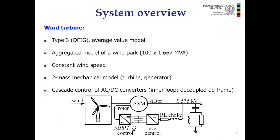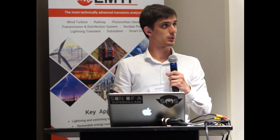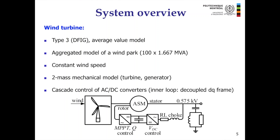Taking a closer look at the system, starting with the wind farm: it's a DFIG induction generator. In this simulation we use an average value model, and this is an aggregated model of a wind park with 100 smaller wind turbines of 1.67 MVA each. We use constant wind speed and a two-mass mechanical model — one part is the turbine and the other is the generator. For the control part, there is an AC-DC-AC converter using standard cascade control structure, with an inner current control loop and an external loop for DC voltage control or MPPT for the wind farm side. It uses decoupled DQ control.